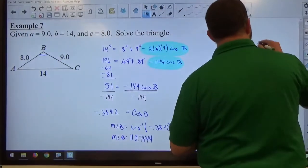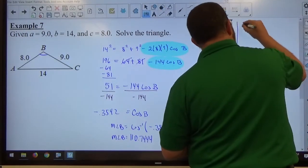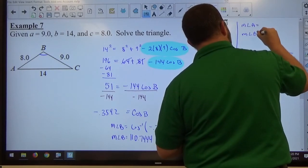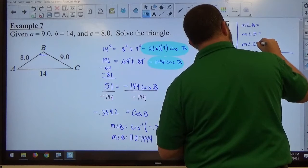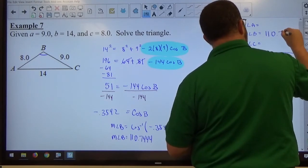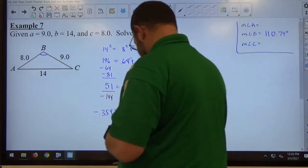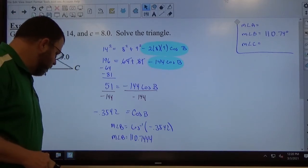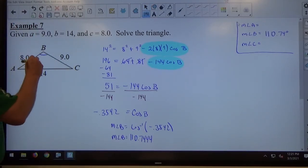So angle B is 110.74. So I'll make my answer box up here. Measure of angle A equals something. Measure of angle B equals something. Measure of angle C equals something. B is 110.74 degrees. Again, if we were going sig figs on that, we would have gone 110, right? The zero is not significant because it's in front of the decimal. But a couple decimal places for me is fine.